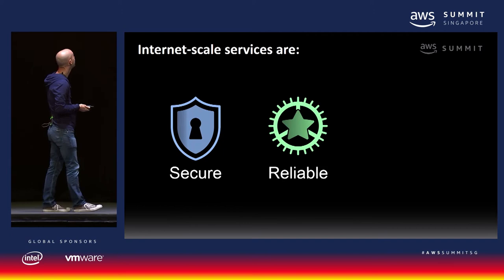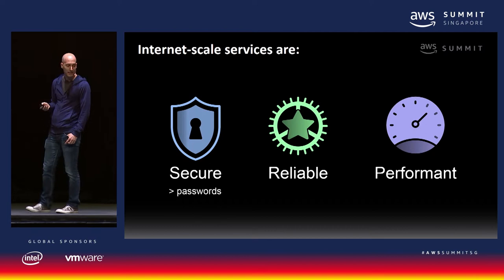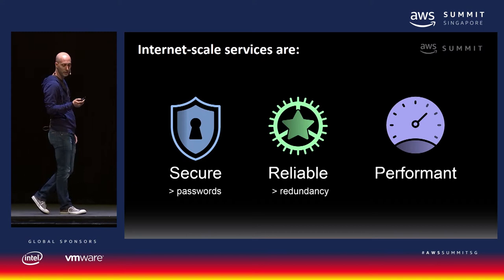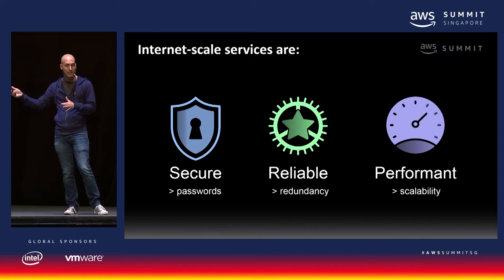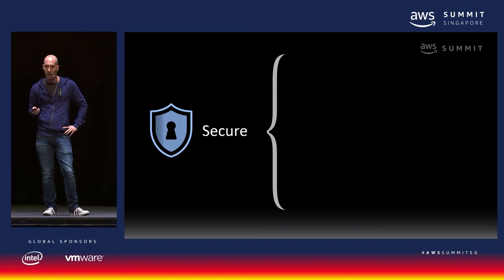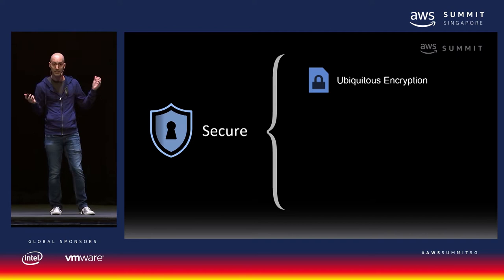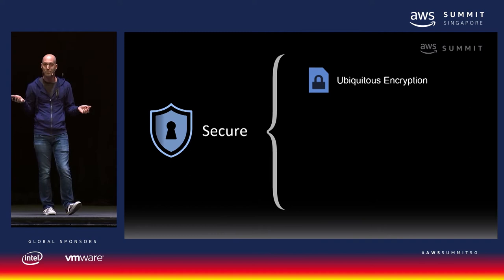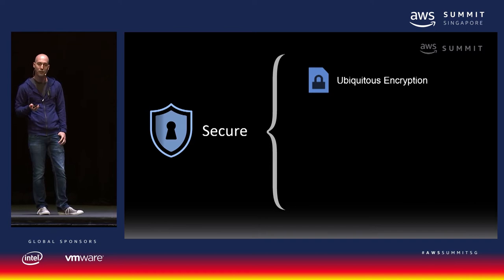I want to talk about internet-scale services. Internet scale services should be secure, reliable, and performant — but security is about more than just passwords, reliability is about more than just redundancy, and performance is about more than just scalability. Security is job zero at AWS. The first concept is ubiquitous encryption — you should definitely be encrypting, whether terminating SSL endpoints with API Gateway, encrypting data at rest in S3, DynamoDB, or Aurora, or using KMS to manage your keys. AWS is recently FIPS 140-2 certified, meaning we pass government-grade security standards for cryptographic modules.